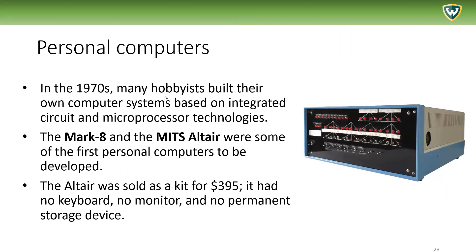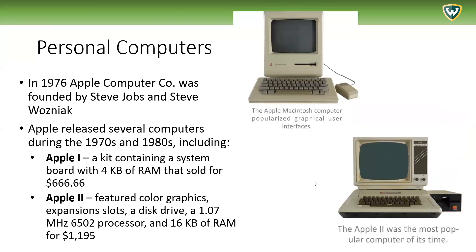In the 1970s, many hobbyists built their own computer systems based on integrated circuit and microprocessor technologies. The Mark 8 and the MITS Altair were some of the first personal computers to be developed — this is what computers looked like in the 70s. The Altair was sold as a kit for $395. It had no keyboard, no monitor, and no permanent storage device, but these machines were being developed and experimented with, which helped advance computer development.